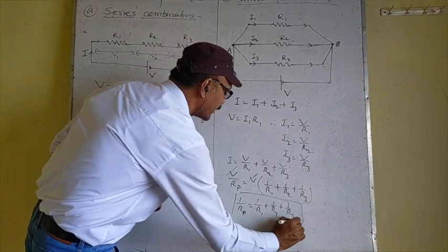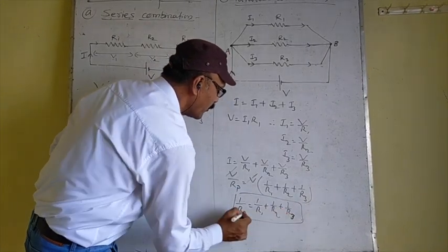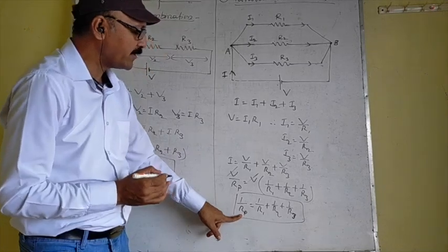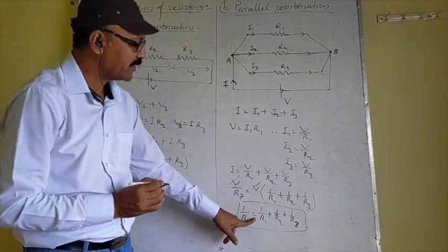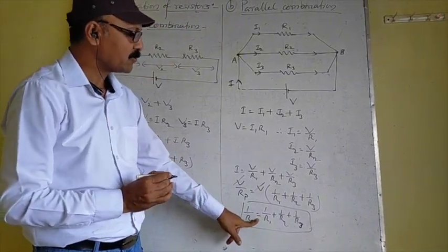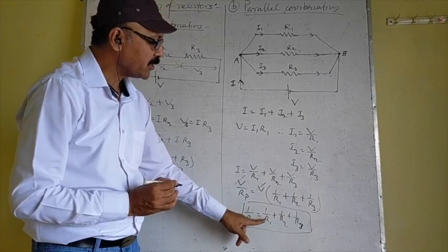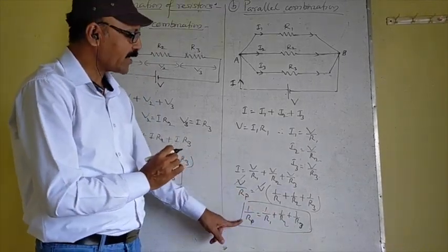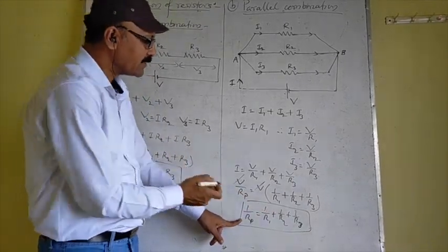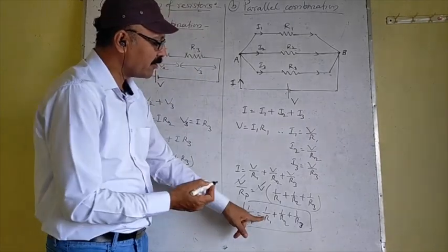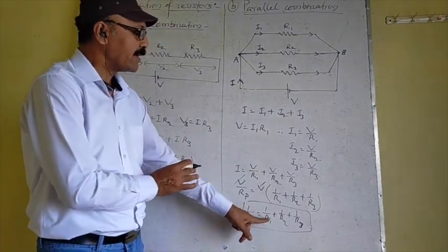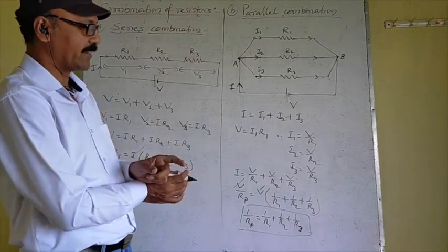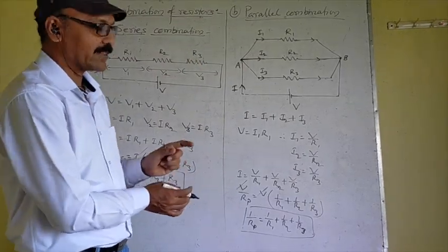So in this case, the equivalent resistance in the Parallel Combination is equal to the sum of the reciprocals of the individual resistances. The equivalent resistance in a Parallel Combination is always less than the least resistance among the three. Thank you.